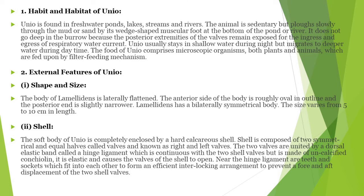The body is a soft-bodied animal, but the whole body is covered by a shell. The shell is covered by the mantle cavity. The shell is divided into two symmetrical equal halves known as right and left valves. The two valves are united by a dorsal elastic band called a hinge ligament, which is continuous with the two shell valves and is made of uncalcified conchiolin. It is elastic and causes the valves of the shell to open. Near the hinge ligament are teeth and sockets which fit into each other to form an efficient interlocking arrangement.